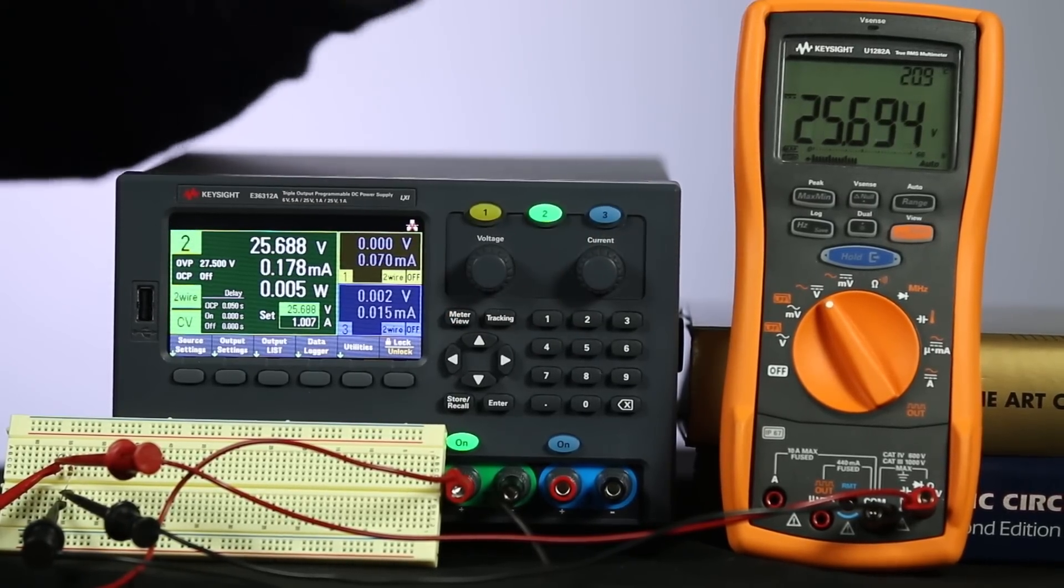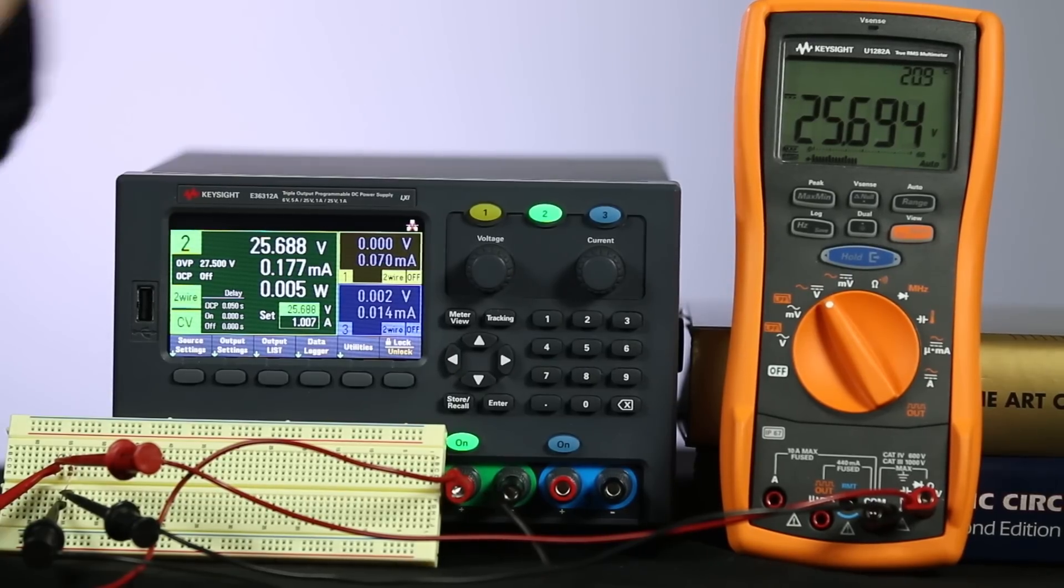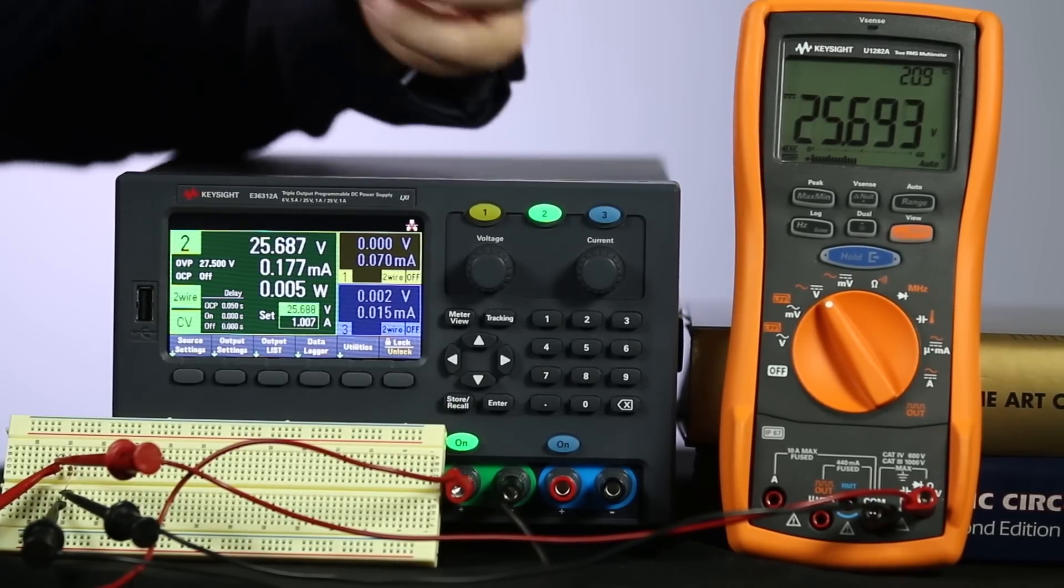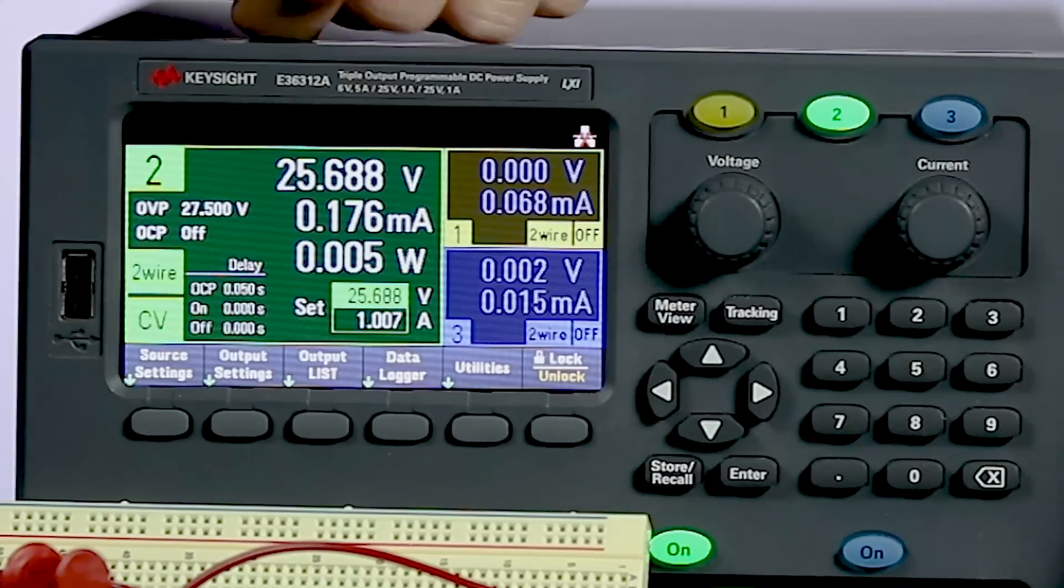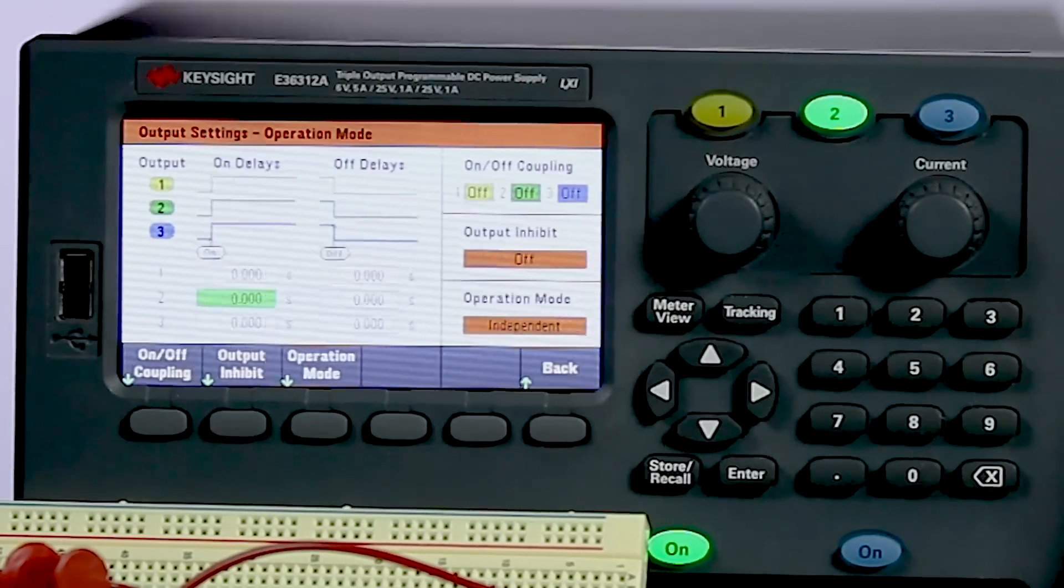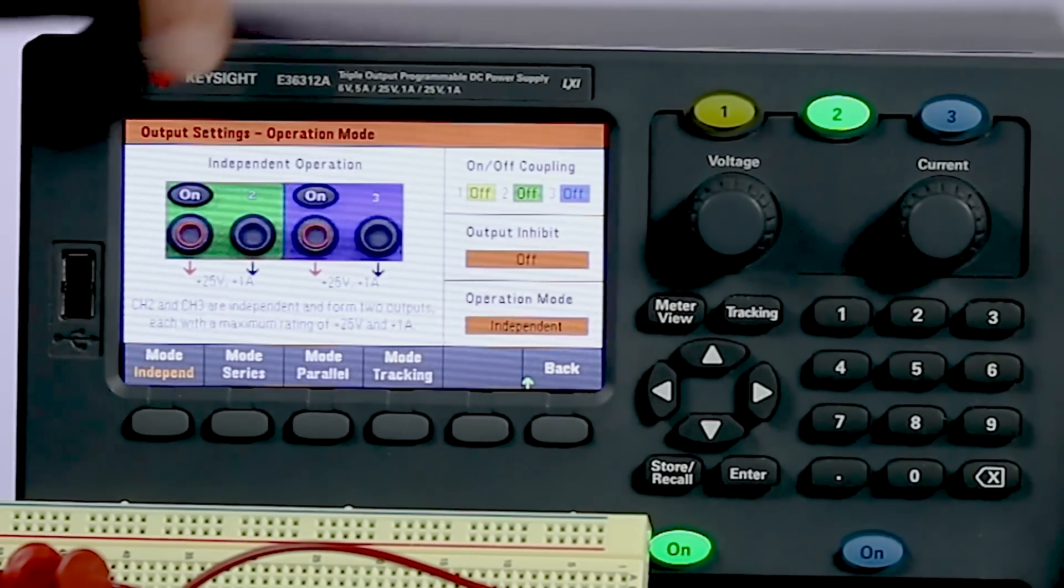That tells me I'm definitely at the output max for channel 2. If I want to get more voltage out of this, I can set up a series connection. So, I'm going to go to output settings, operation mode, and then I'm going to change my mode from independent.